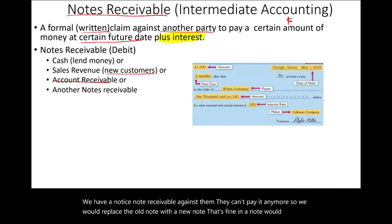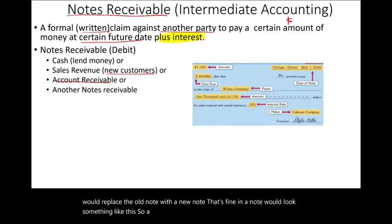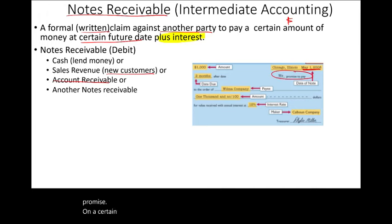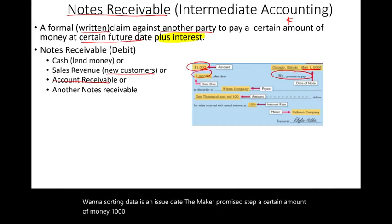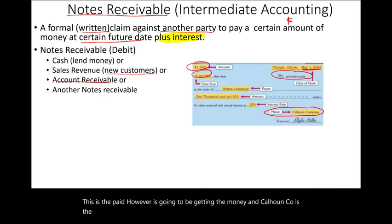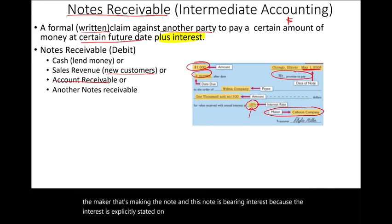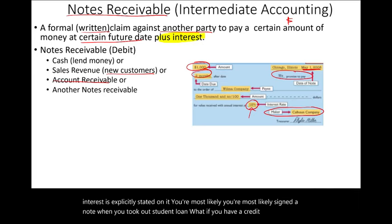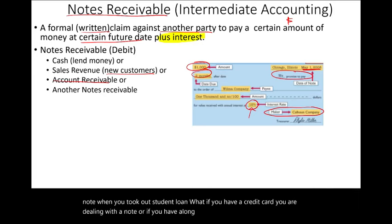A note looks something like this: there is a maker who promises on a certain issue date to pay a certain amount — say $1,000 — two months from now to a payee, such as Wilma Company. Calhoun Company is the maker. This note is interest-bearing because the interest rate is explicitly stated on it. You most likely signed a note when you took out a student loan or a credit card agreement.